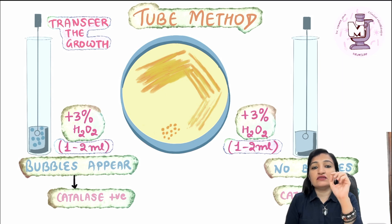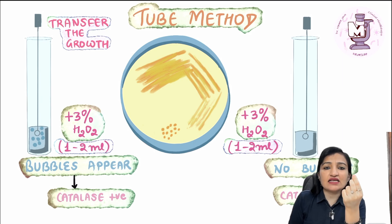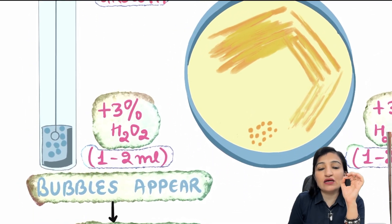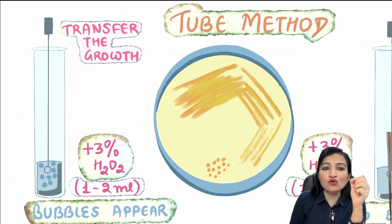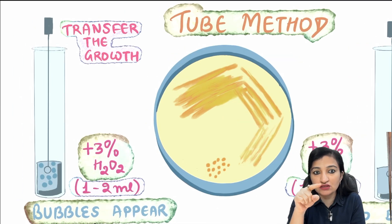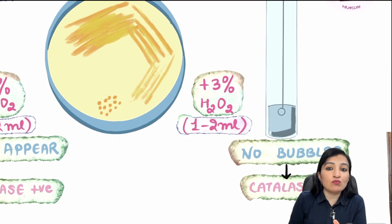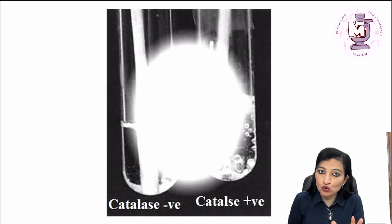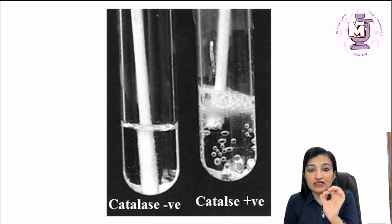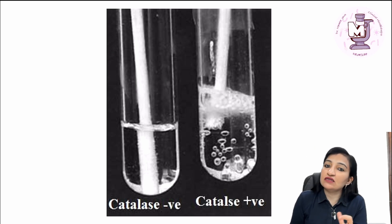The second method is the tube method. Here also, 18 to 24 hour old colonies are used. As the name implies, the test is carried out in test tubes. Add 1 to 2 ml of 3% H2O2 to the test tube, then transfer the colonies into the tube using a sterile inoculation loop. If bubbles appear, the test is positive. If no bubbles appear, catalase test is negative. On the left is the negative catalase test tube method; on the right is the positive catalase test tube method.